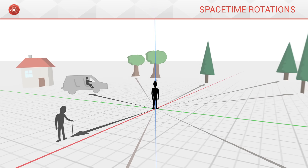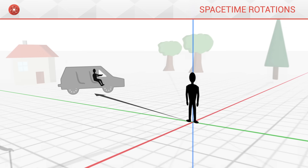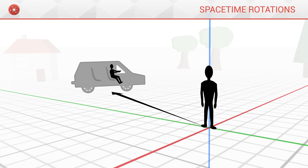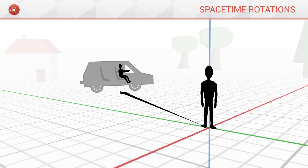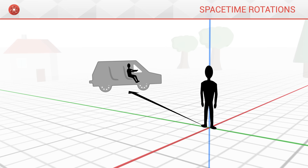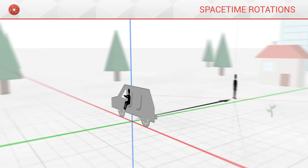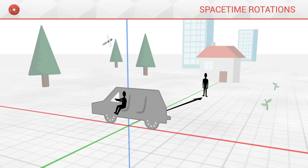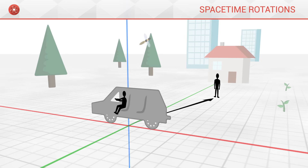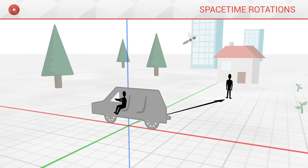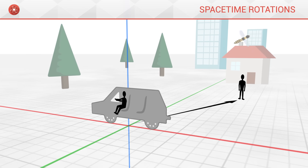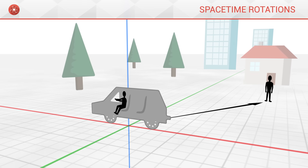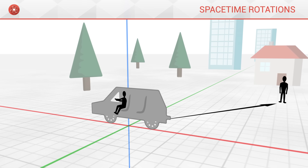Taking this person's frame of reference, for example, the car is moving. But in the driver's frame of reference, it is the person looking on which moves. Frames of reference describe the universe from a given point of view.